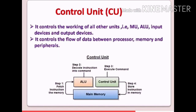The control unit coordinates between all the parts of the CPU. The control unit gets data and instructions from the memory unit and passes them on to the ALU in a step-by-step manner.